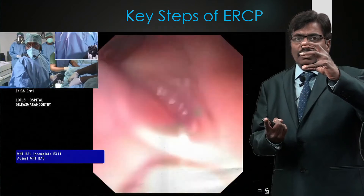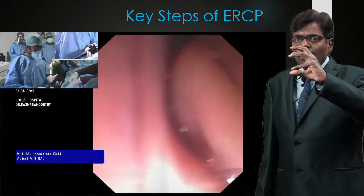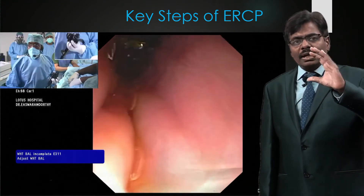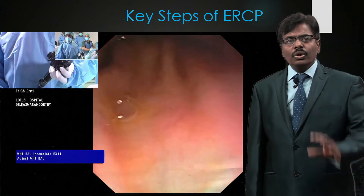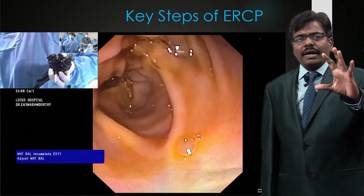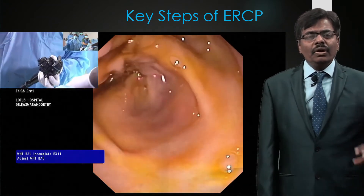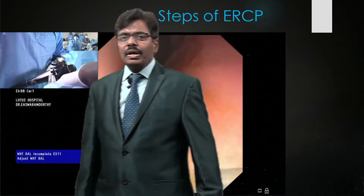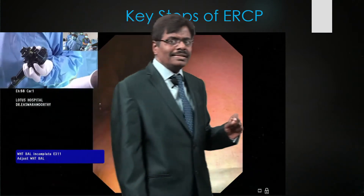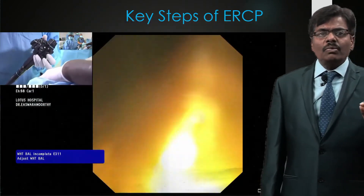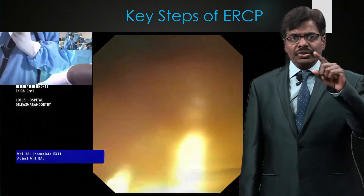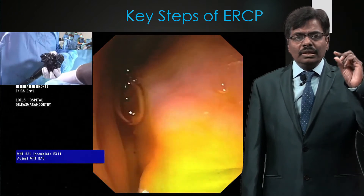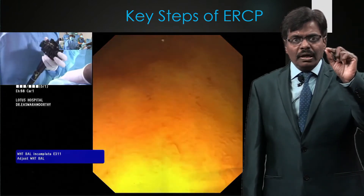With the big wheel away from you, the tip deflects one way; big wheel towards you takes it the other way. Going along the greater curvature — the long route — you can see the antrum, and we are approaching the pylorus. You will see what we call the sunset appearance: the pylorus appears at approximately the 6 o'clock position on the monitor — like a clock face — three-quarters visible and one quarter hidden.